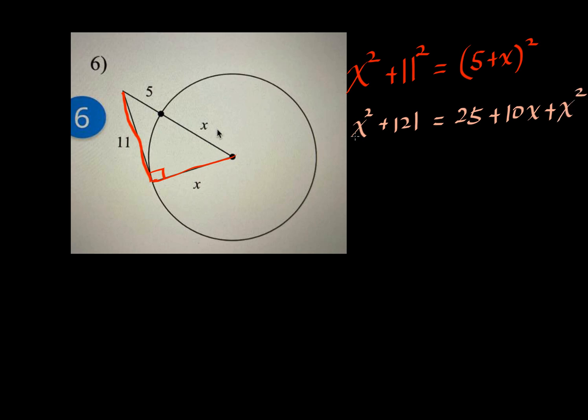If we minus X squared, they'll cancel away. So we have 10X on the right side, and then I'm going to subtract 25 from 121. So it's going to be 96.